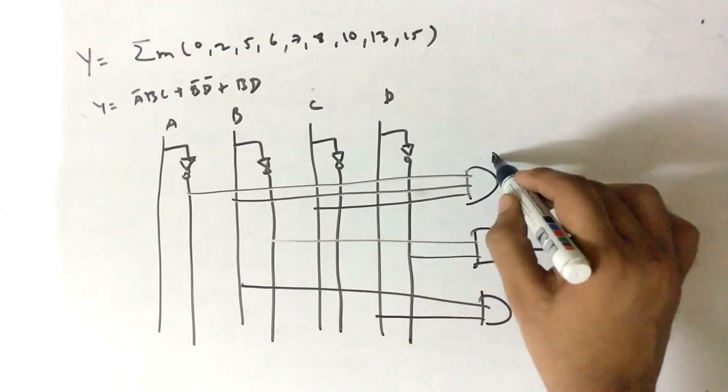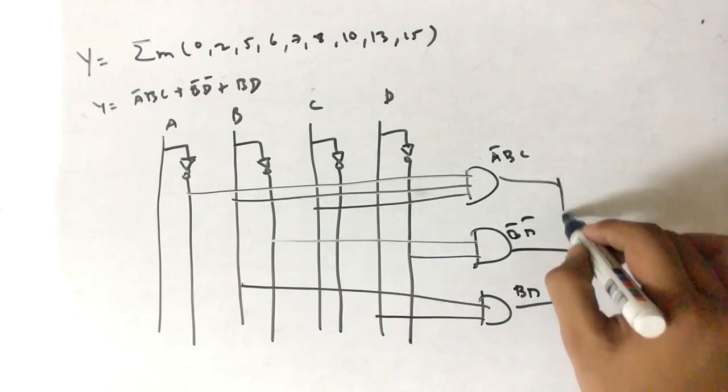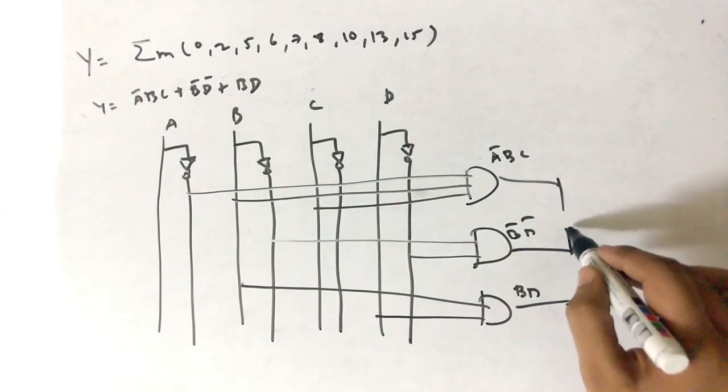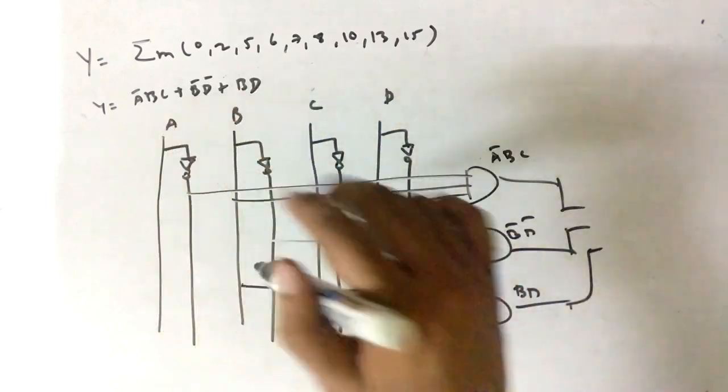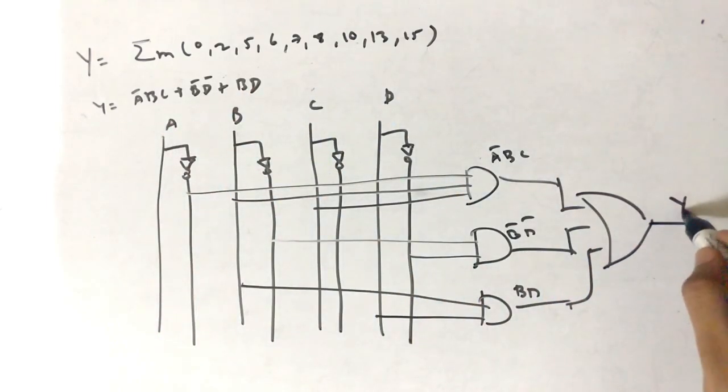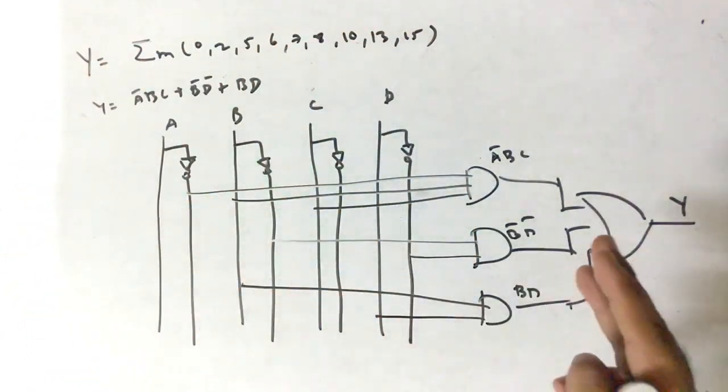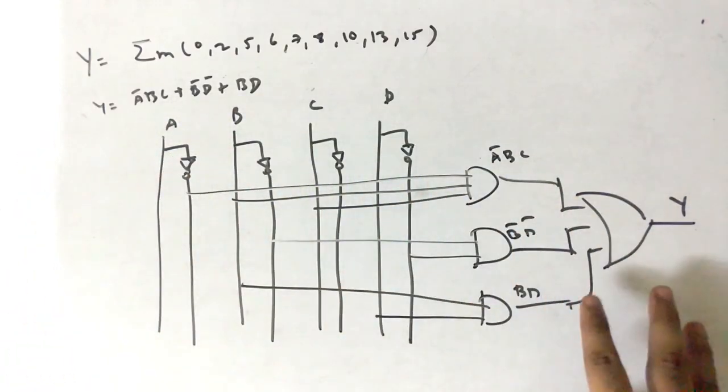Output here is a bar b c, output here is b bar d bar, output here is b d. Then we have to use OR because we are adding all of that. So the OR gate and this is the output. In this way you can minimize this by using the K-map. After finding the equation you can implement using the basic gates like this.